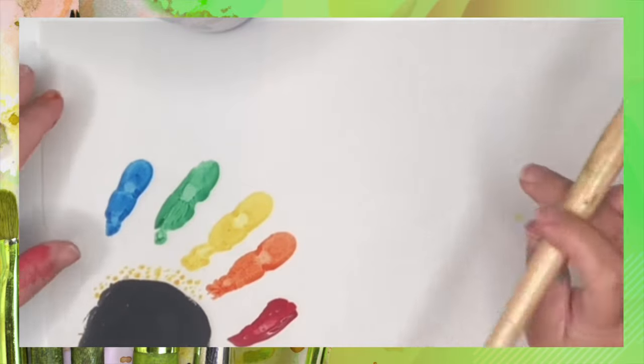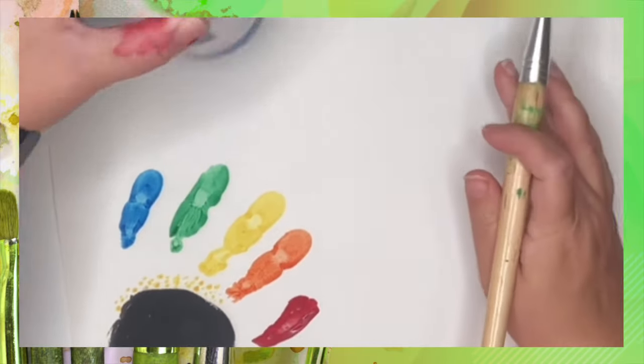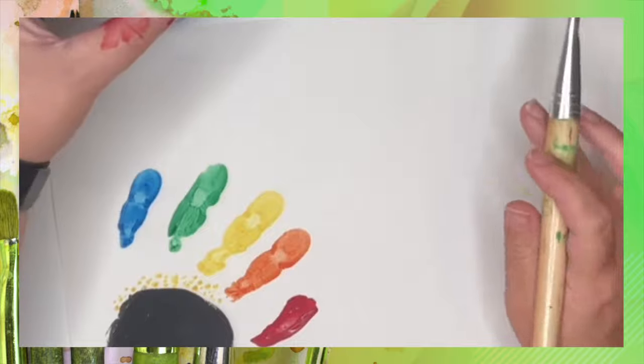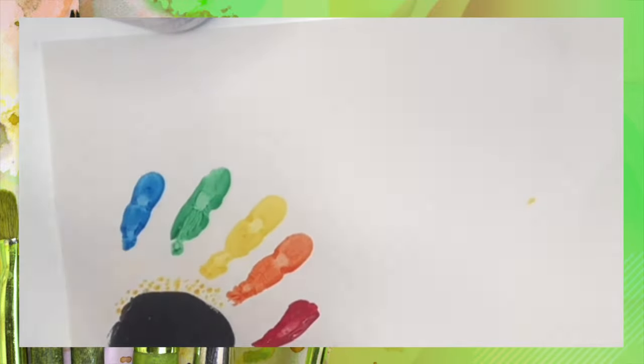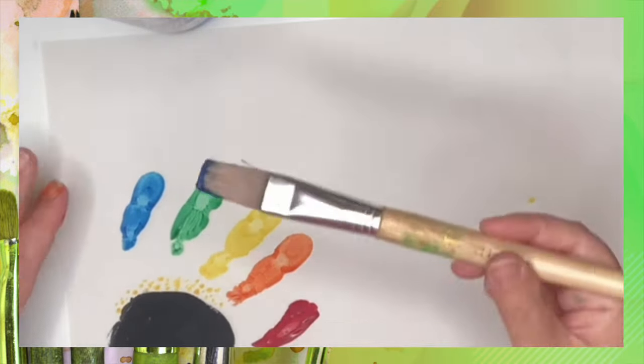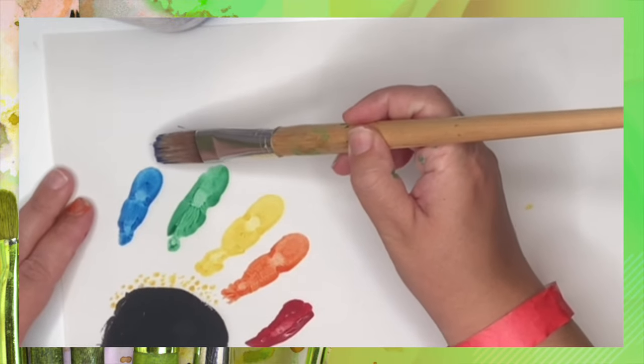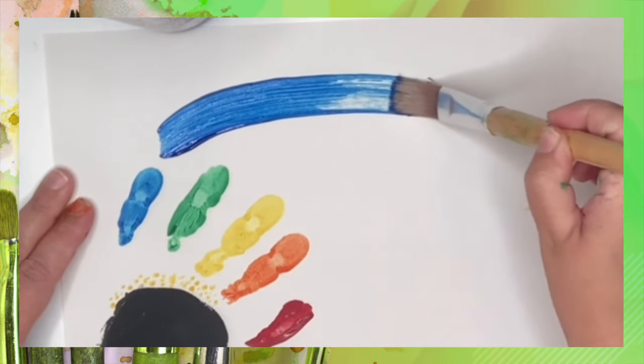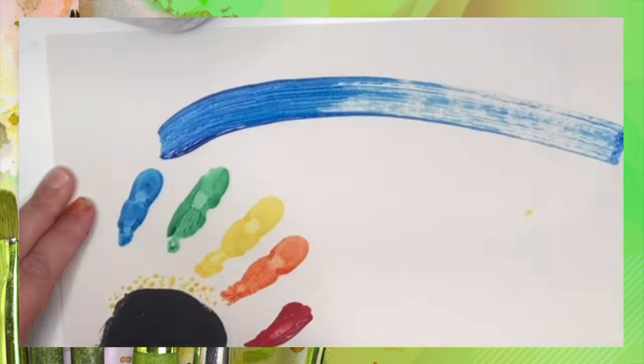So now we are going to paint our rainbow. So we grab our blue paint to start the rainbow. And of course the paintbrush or always your finger if you don't have a paintbrush.